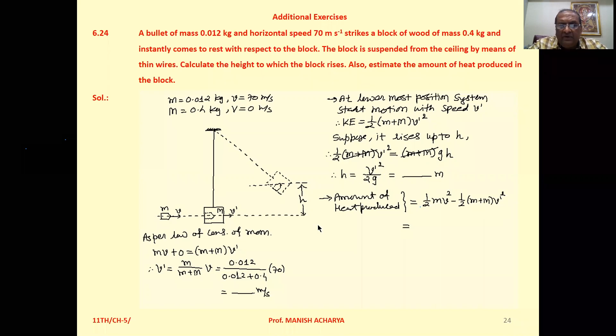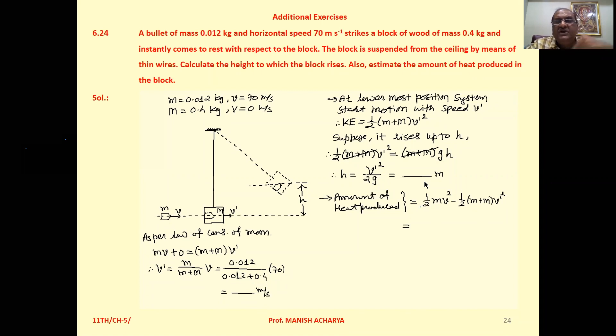v dash has already been calculated. Substitute the value of g and solve to get the height up to which the entire system rises.